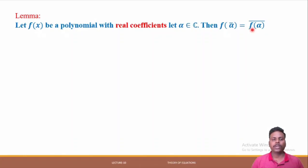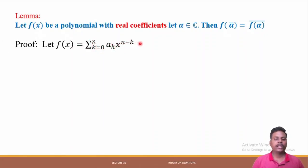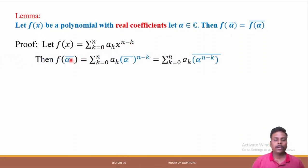Here is the proof of the lemma. We write f(x) = Σ(k=0 to n) aₖ · x^(n−k), using summation notation, where aₖ indicates the coefficients. As k goes from 0 to n, the powers of x decrease. Now we substitute ᾱ into the polynomial and get Σ(k=0 to n) aₖ · (ᾱ)^(n−k).